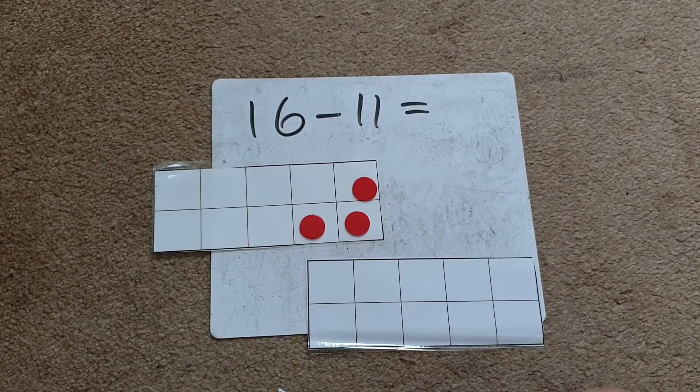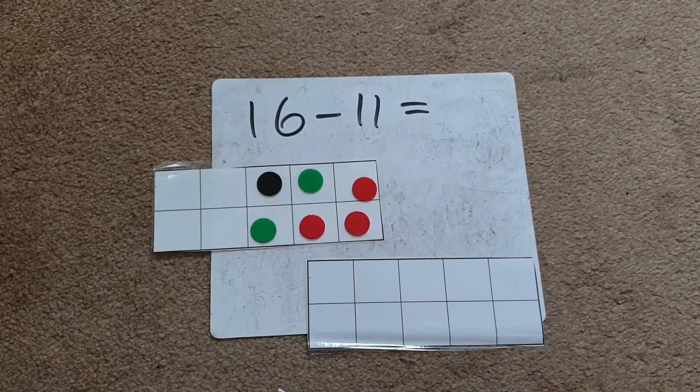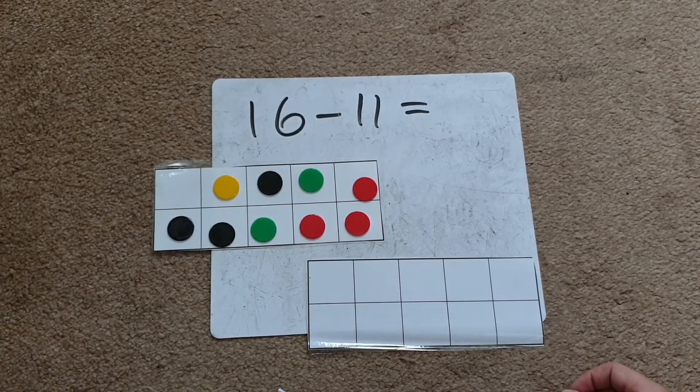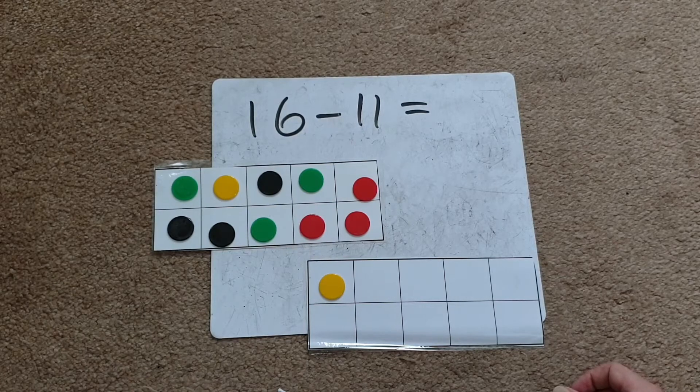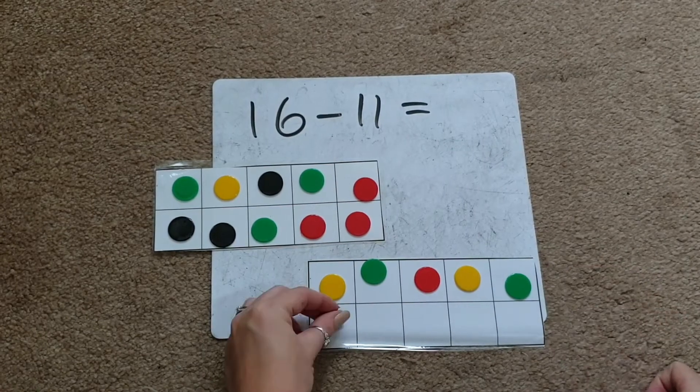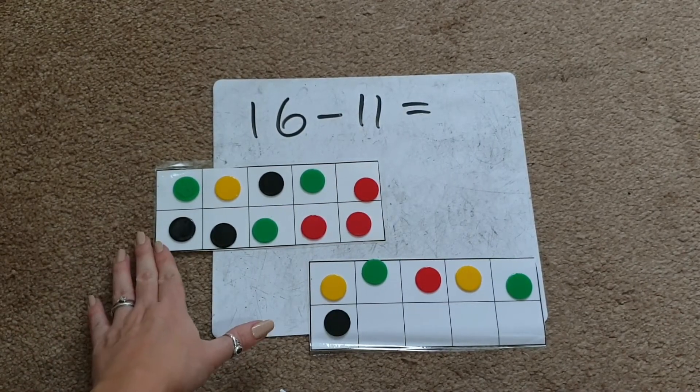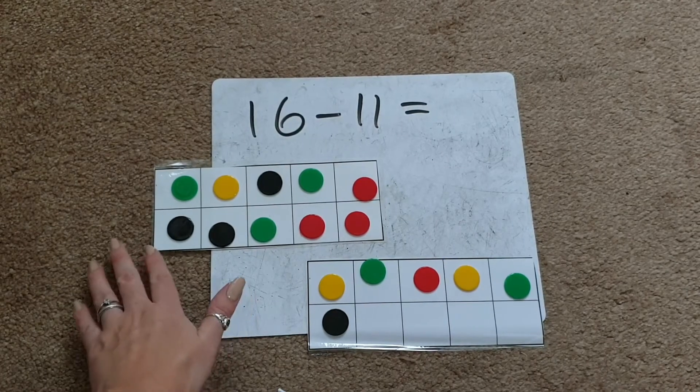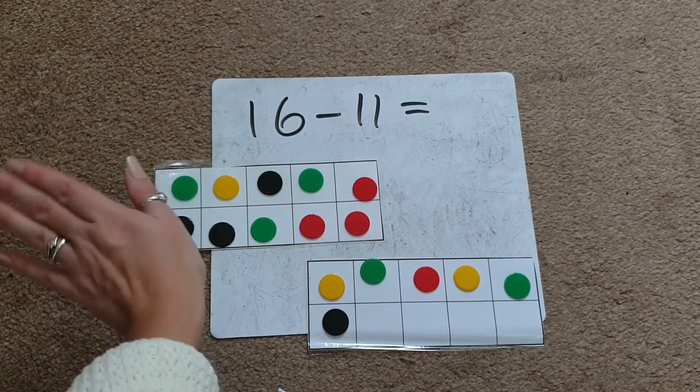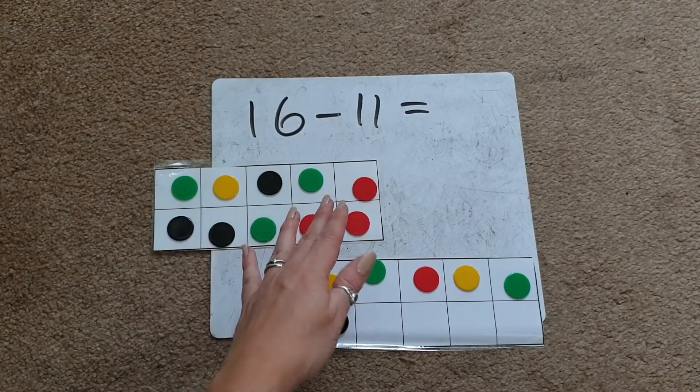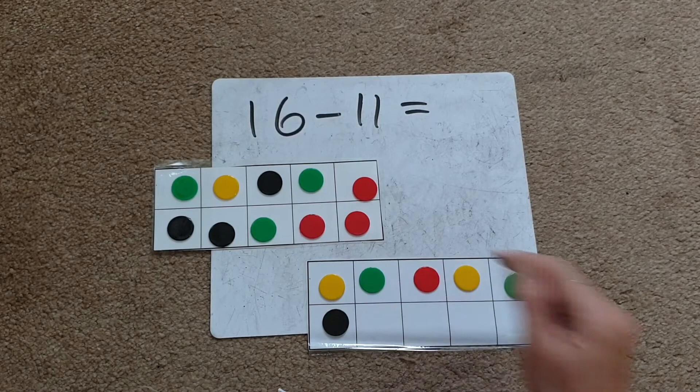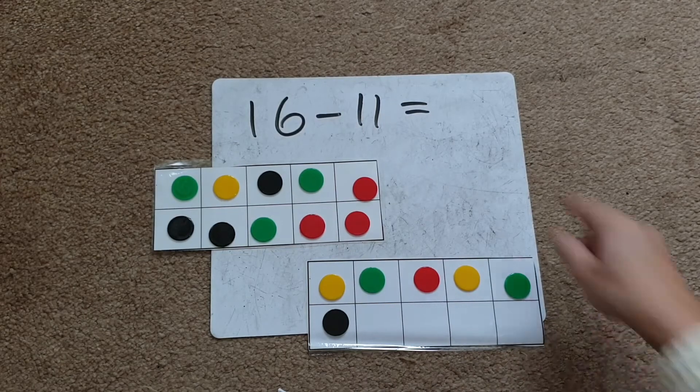Let's count out 16: 1, 2, 3, 4, 5, 6, 7, 8, 9, 10, and then 1, 2, 3, 4, 5, 6. This is a good opportunity to discuss that when we have a full 10 frame, we know that's 10. Instead of counting one by one, children could fill the 10 frame and recognize it's 10, then just count the six extra counters.